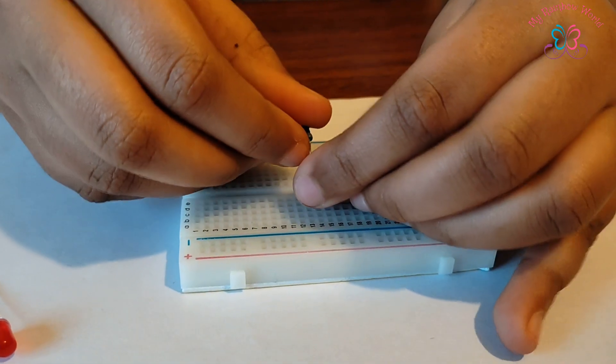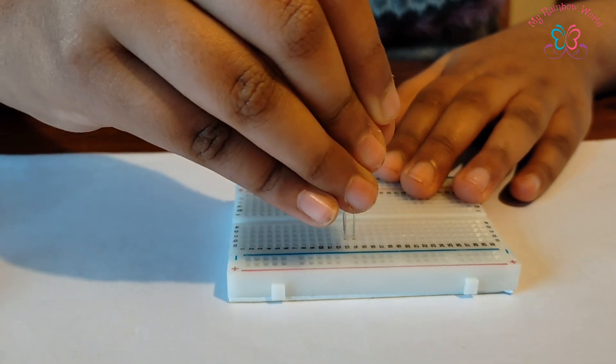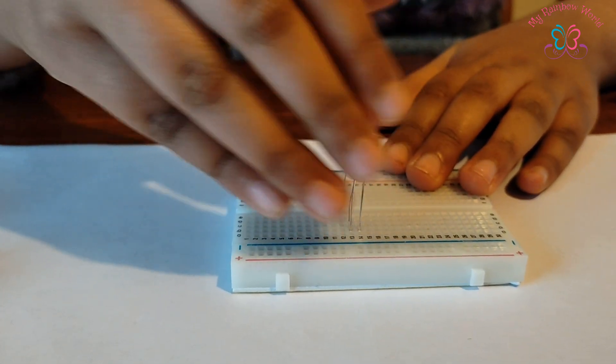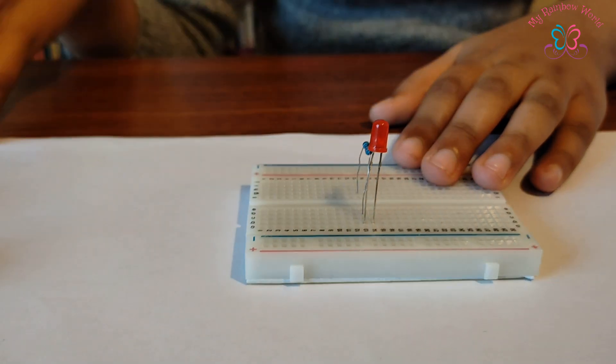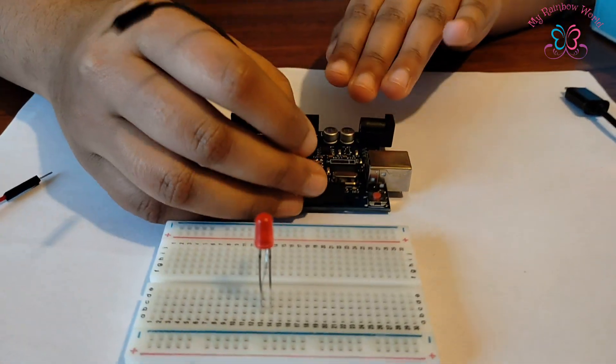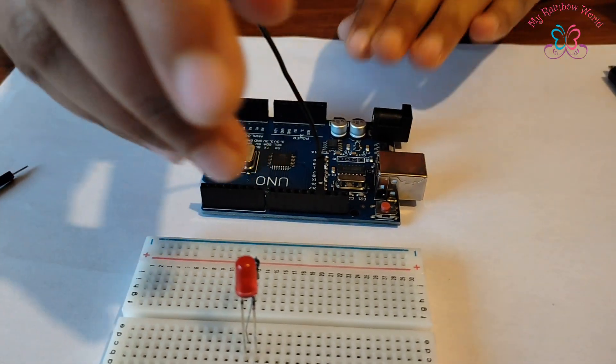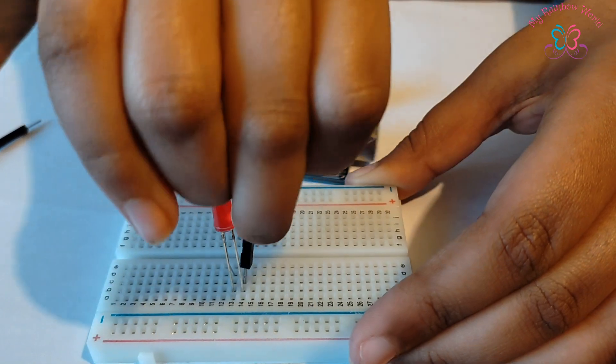First, take the resistor and LED and fix them to the breadboard. The anode of the LED is connected to the resistor. Connect one end of the black jumper to the cathode of the LED and the other side to the ground pin on Arduino.